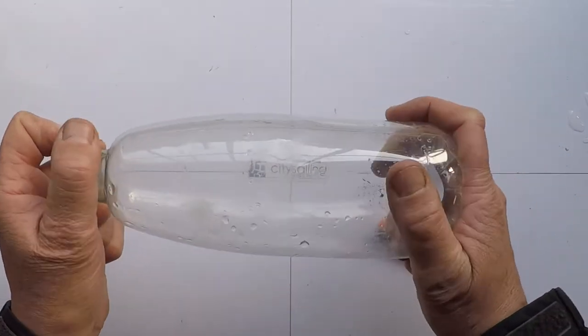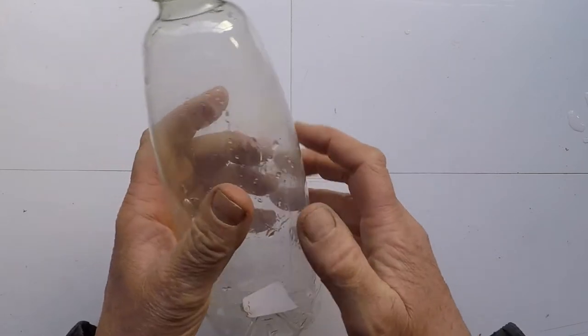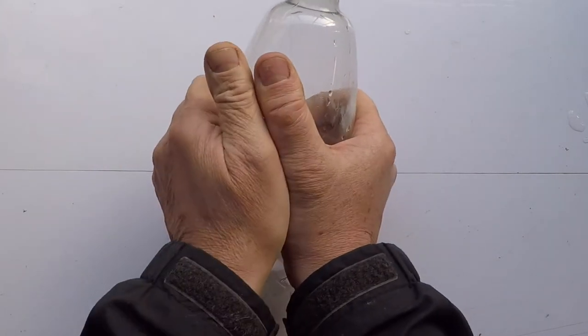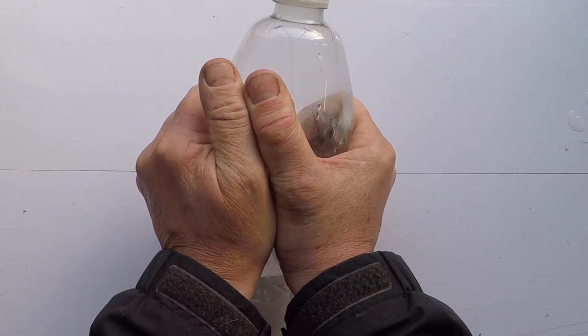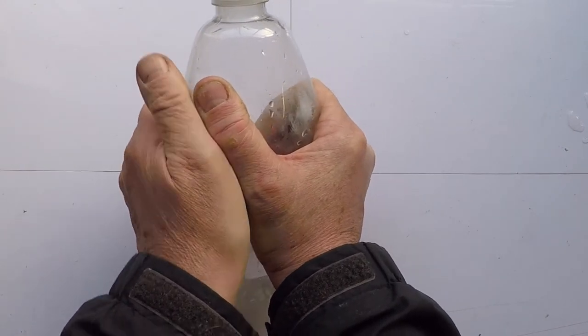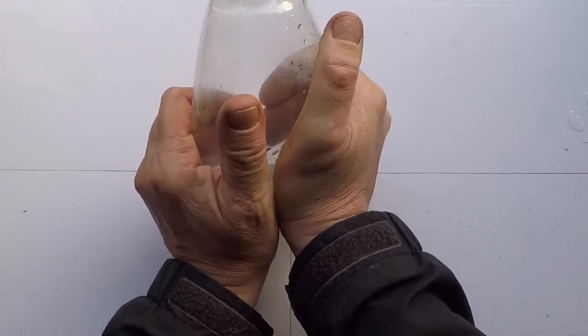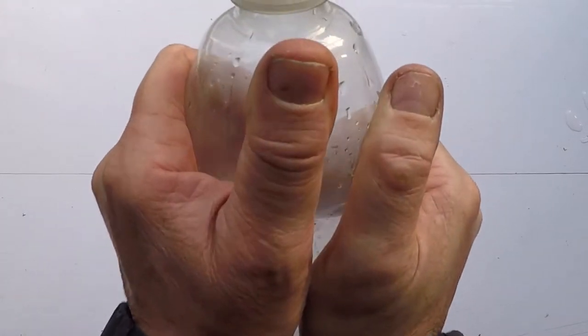So we have a bottle with water in and some smoke. Then what we do is squeeze it really hard. By squeezing it really hard it warms up the air inside. It's like a bicycle pump pushing, and it squeezes and warms up the air. That warm air inside will absorb the moisture inside. So if I let go quickly it goes cold and we get a cloud.